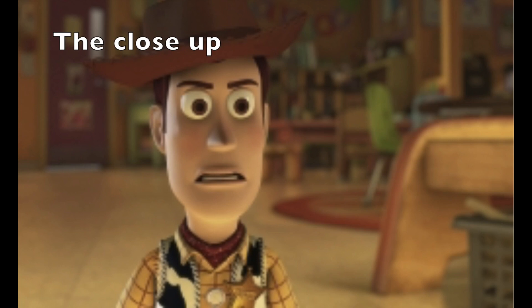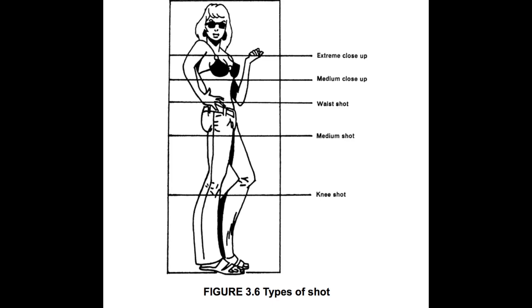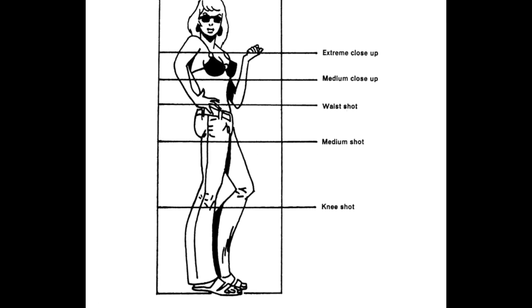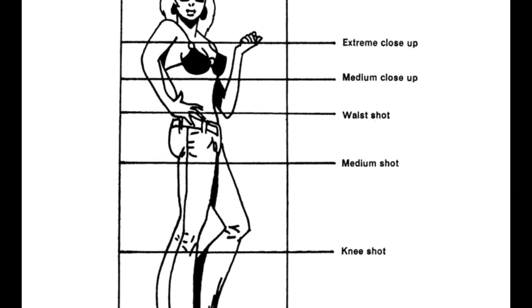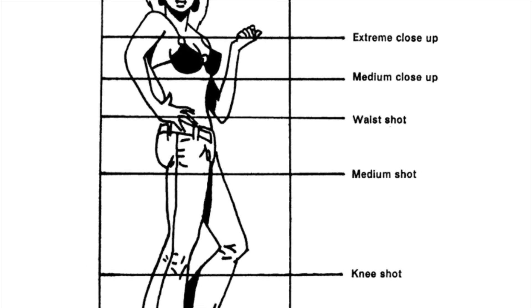The next shot is a close-up, which contains just one character's face. This enables viewers to understand the actor's emotion and also allows them to feel empathy for the character. This is also known as a personal shot. In this example, the shot cuts off Woody's body just below the chest. The generally accepted heights for these cut-offs are the knees, hips, just below the chest, and the armpits.